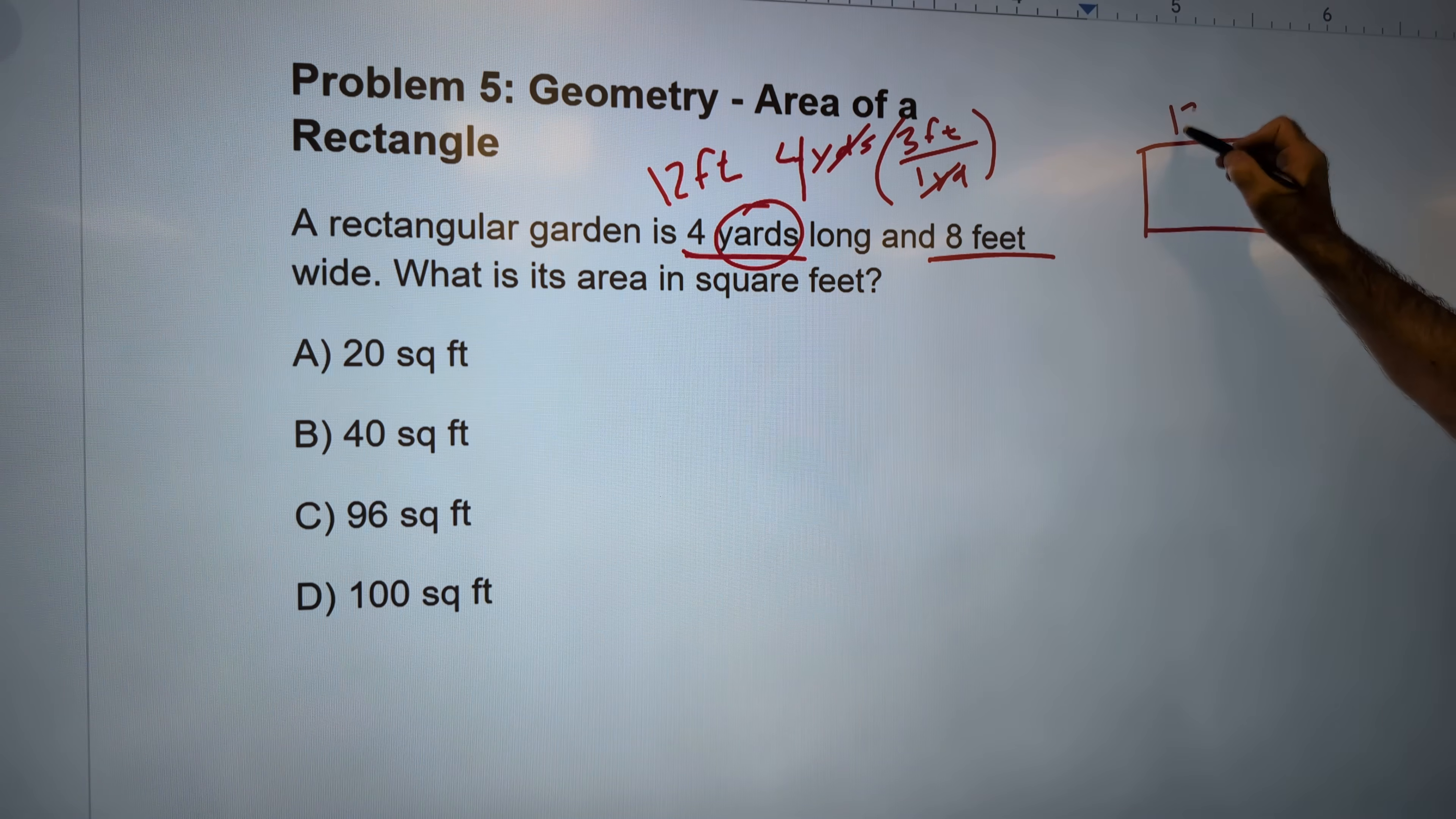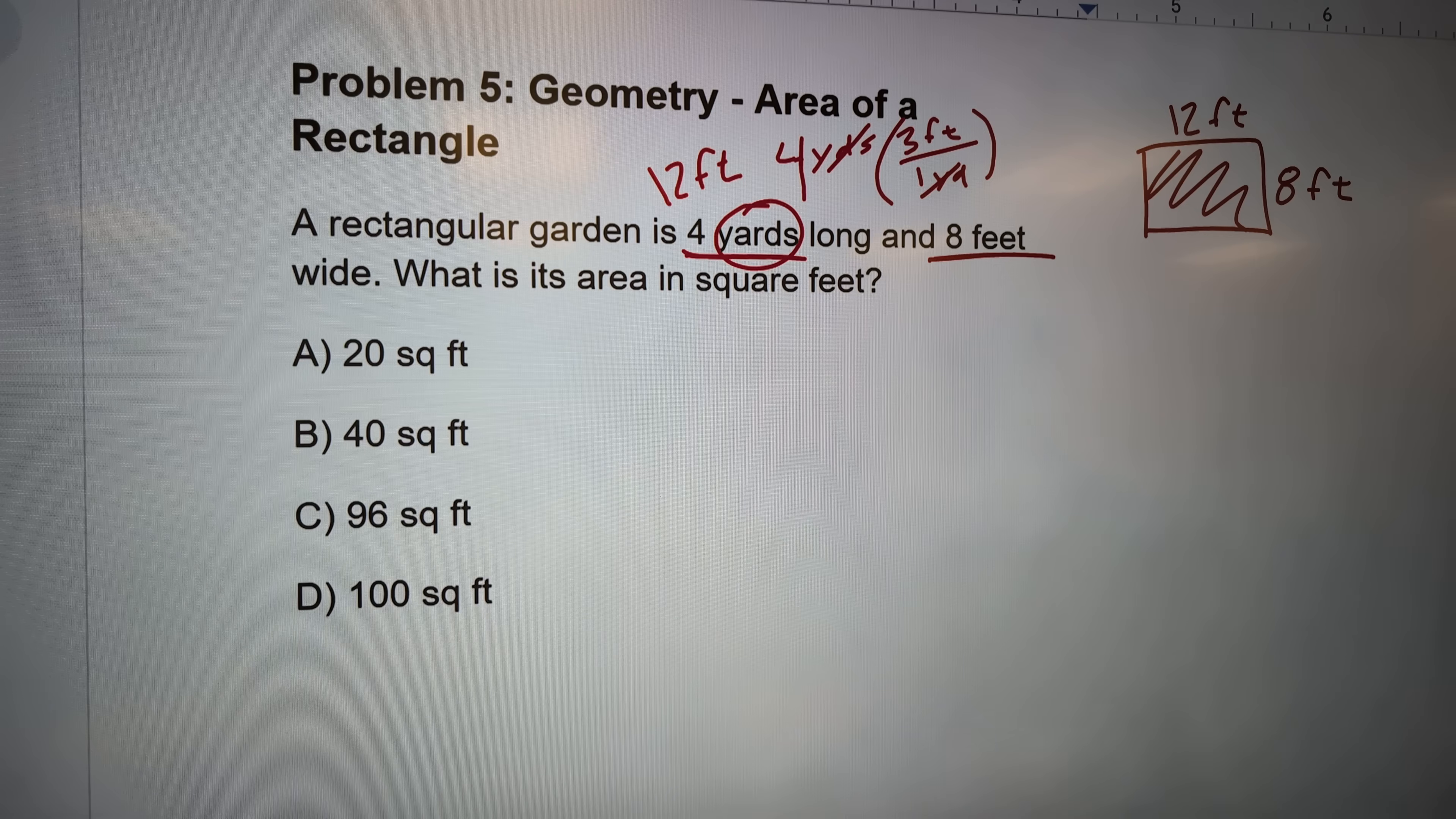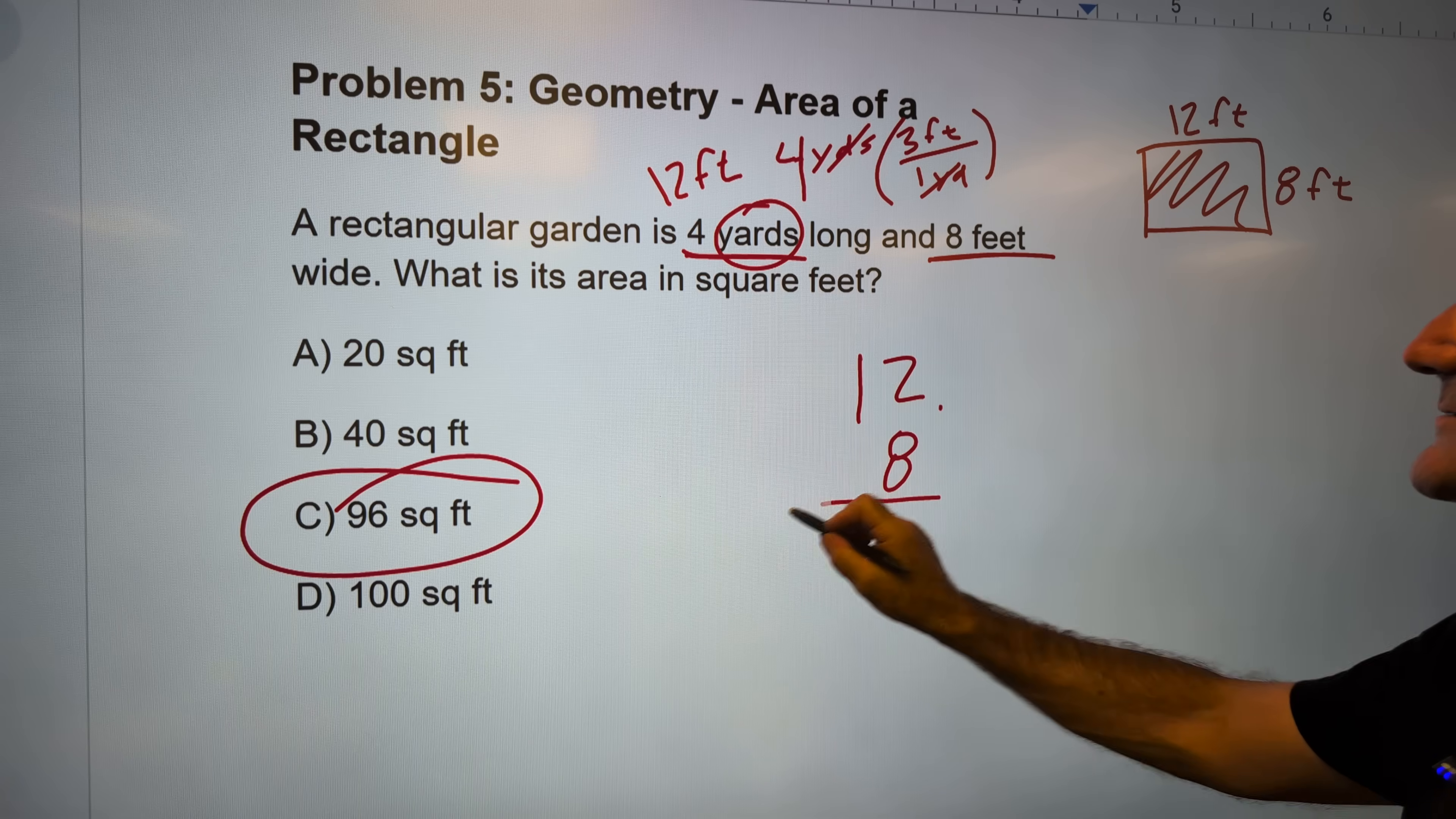So now I have this rectangle that is 12 feet by 8 feet. I got to multiply them together to get this area. 8×10=80. 8×2=16. So 8×12=96 square feet. Correct answer, C. Do that again. 12×8.